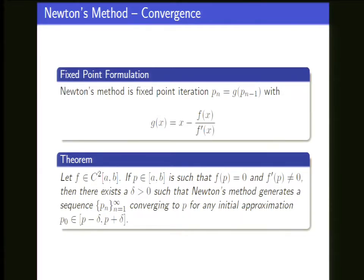How did we prove that? Basically we used the fact that it's a fixed point and the theorem from before. We just have to prove all those things for fixed point: map to itself, derivative small enough, etc. There were some more abstract arguments about that, but it can be shown to be done.